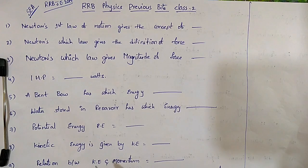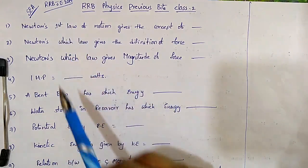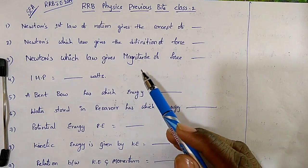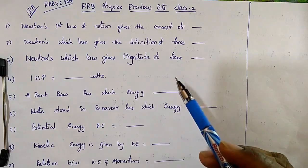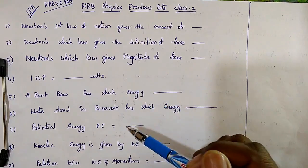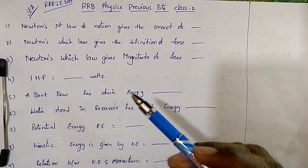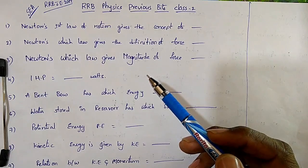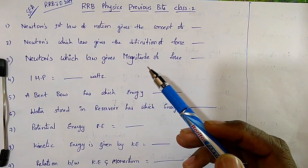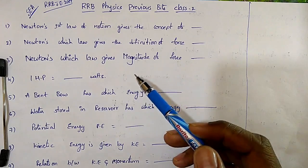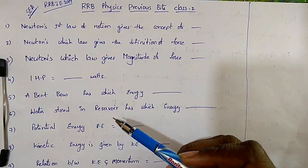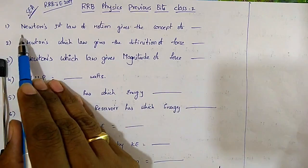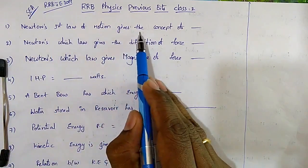Welcome to Sunil Engineering Academy. For RRBJE 2019, we have already completed Physics classes 1 through 5 and previous bits part 1. In this class, I am going to discuss previous RRB bits part 2, covering topics on motion, laws of motion, and gravity.